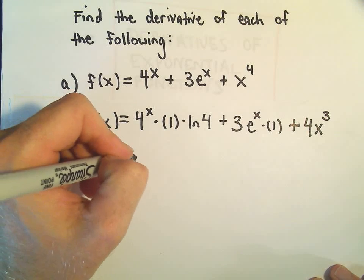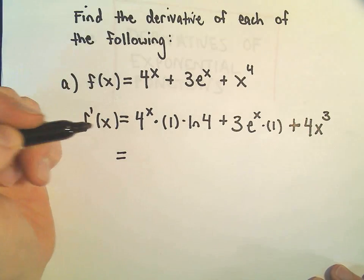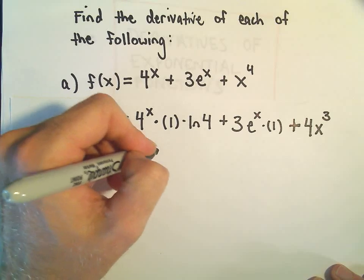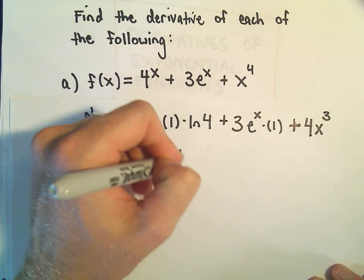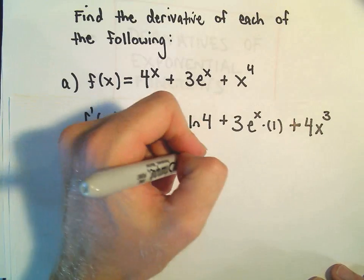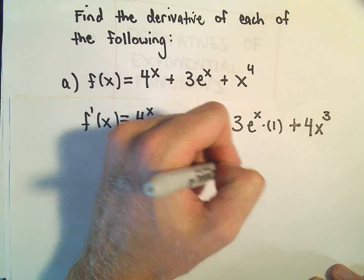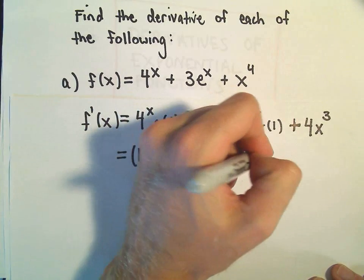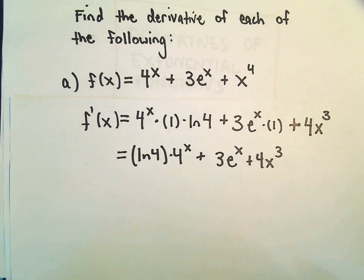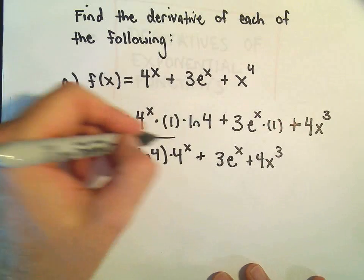So our derivative, I would probably write it, I always pull the constants out first. So ln of 4 times 4 to the x, plus 3 times e to the x, plus 4x to the 3rd. That will be our derivative for part a.